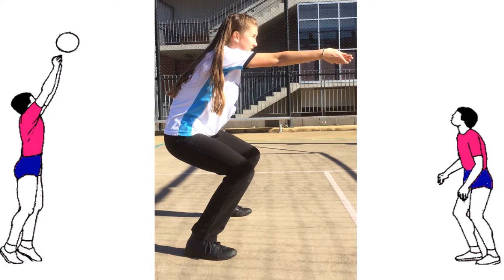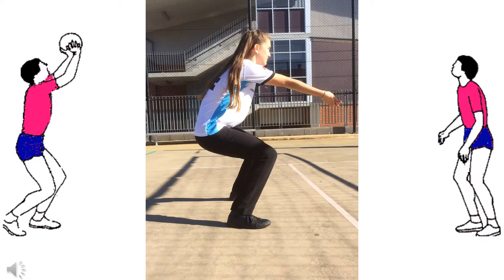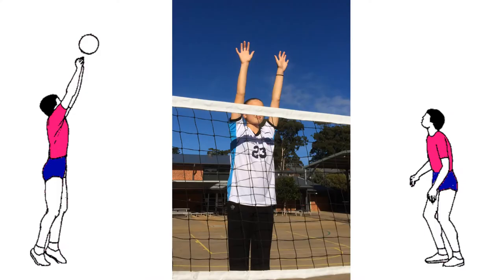But in volleyball, we not only want the ball to go up, but also go forward. To do this, we change the angle of her arms. If Holly's arms are adjusted to between 75 degrees and 80 degrees in line with her knees, the ball will bounce off her arms and rebound forwards.